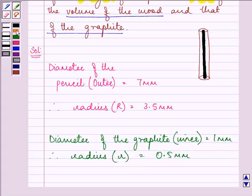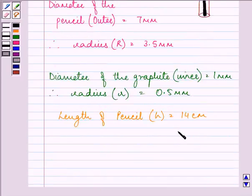We are given the length of the cylinder as 14 cm. Since all other values are in mm, let us convert it to mm, which is 140 mm.